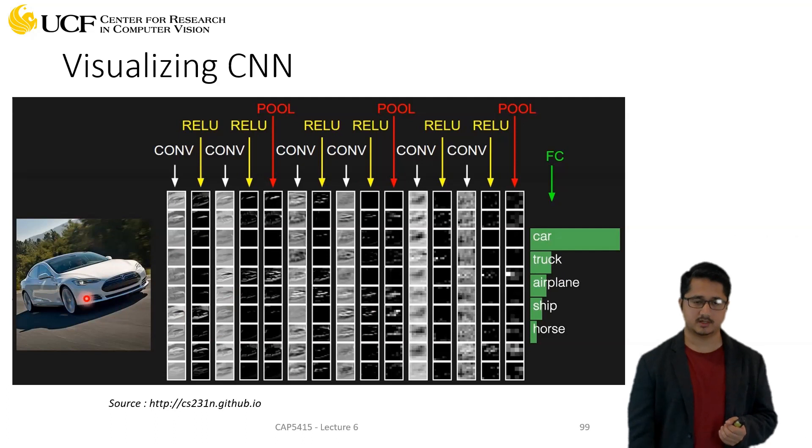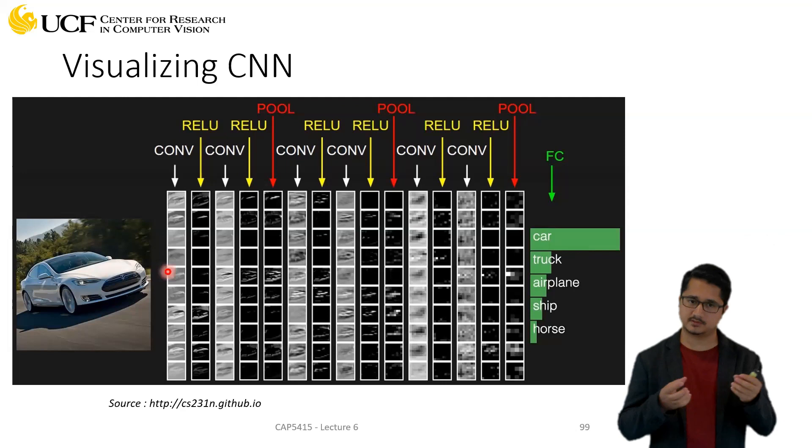Let's try to understand how the data flows. Your input is, let's say, this image. In the first convolution layer you will have some set of filters. For example, in AlexNet we had 96 different filters. In this case I'm showing you roughly around 10 different filters.